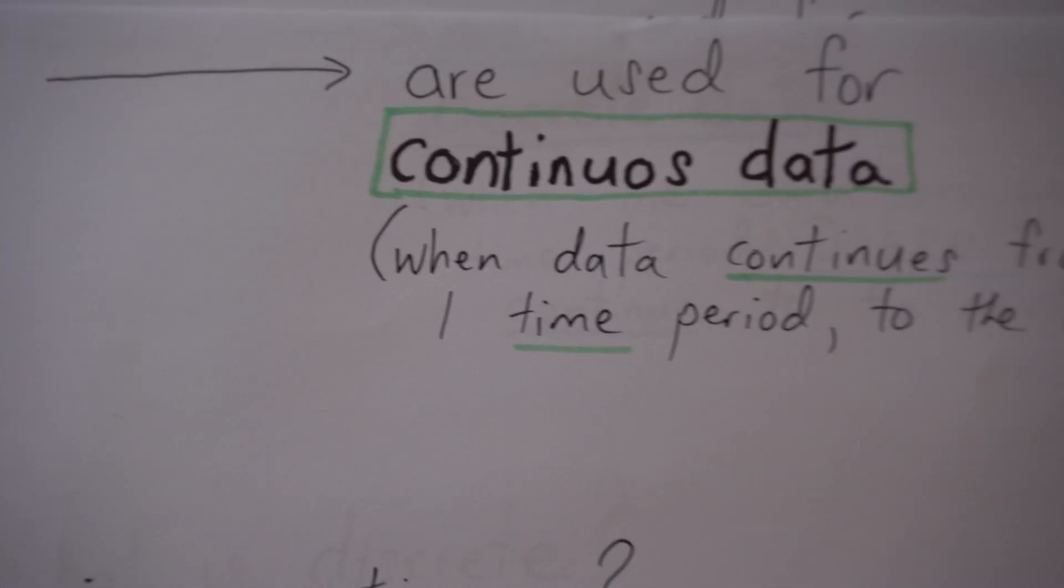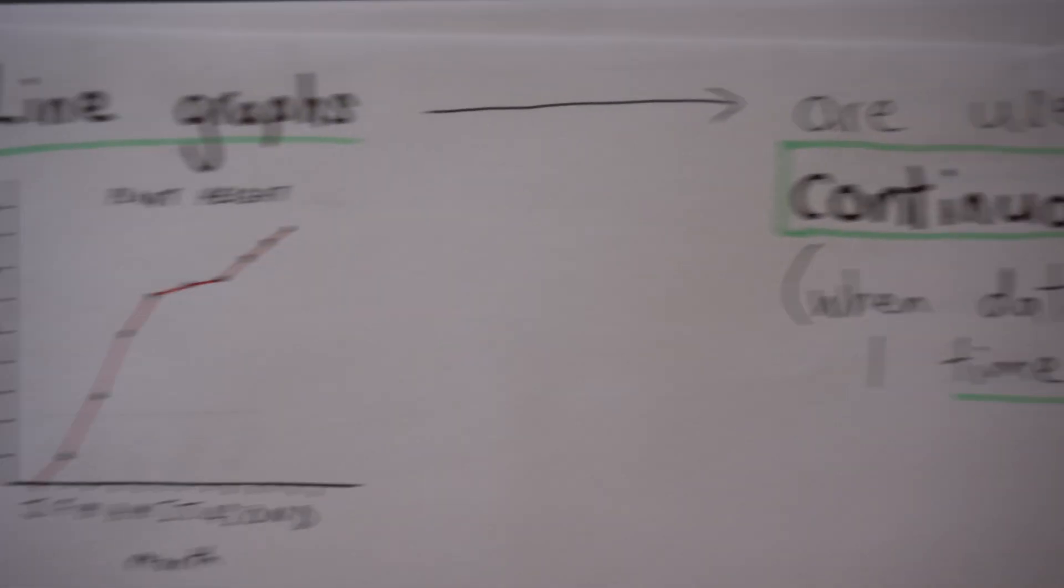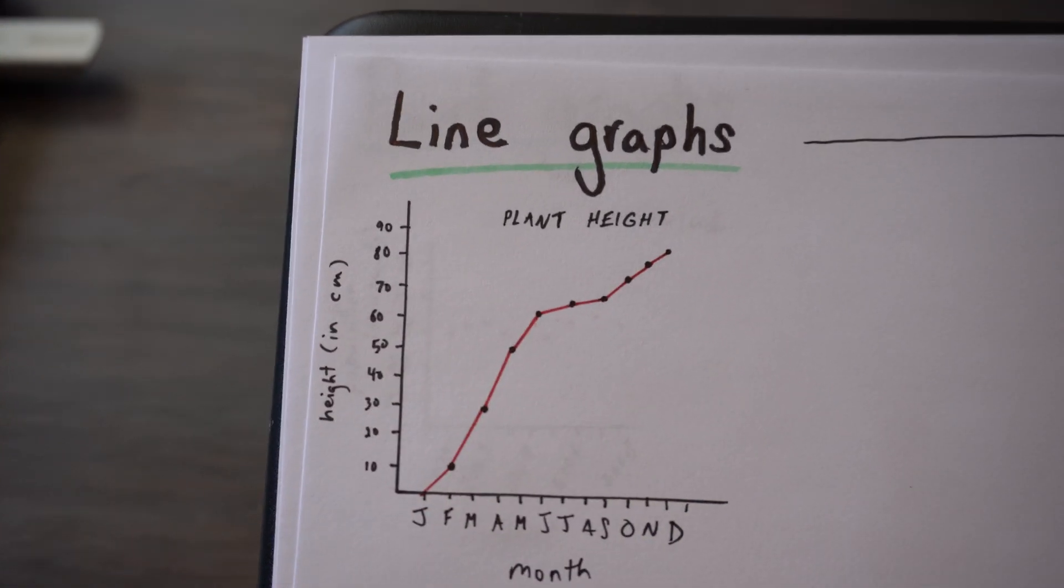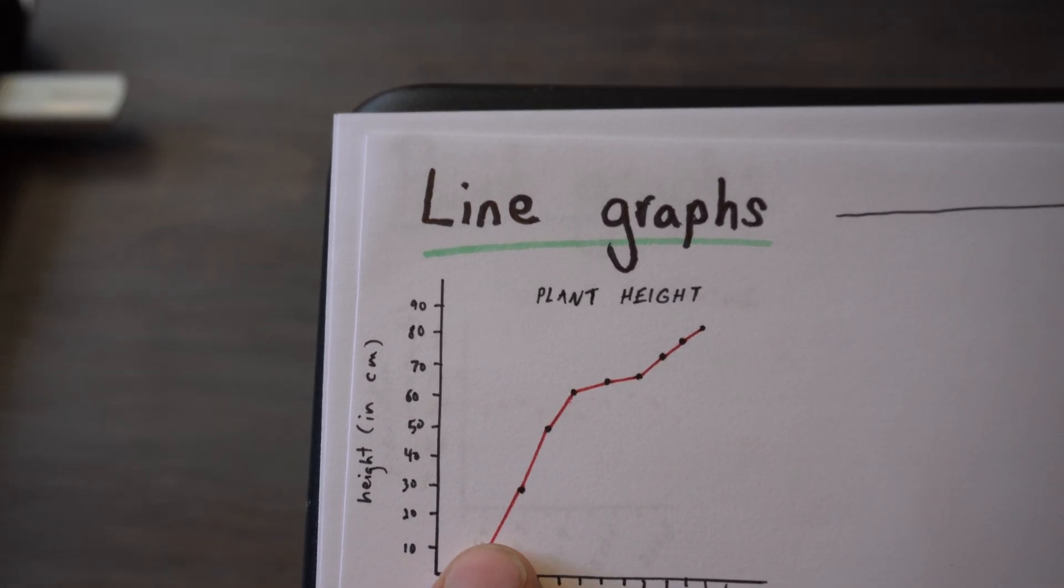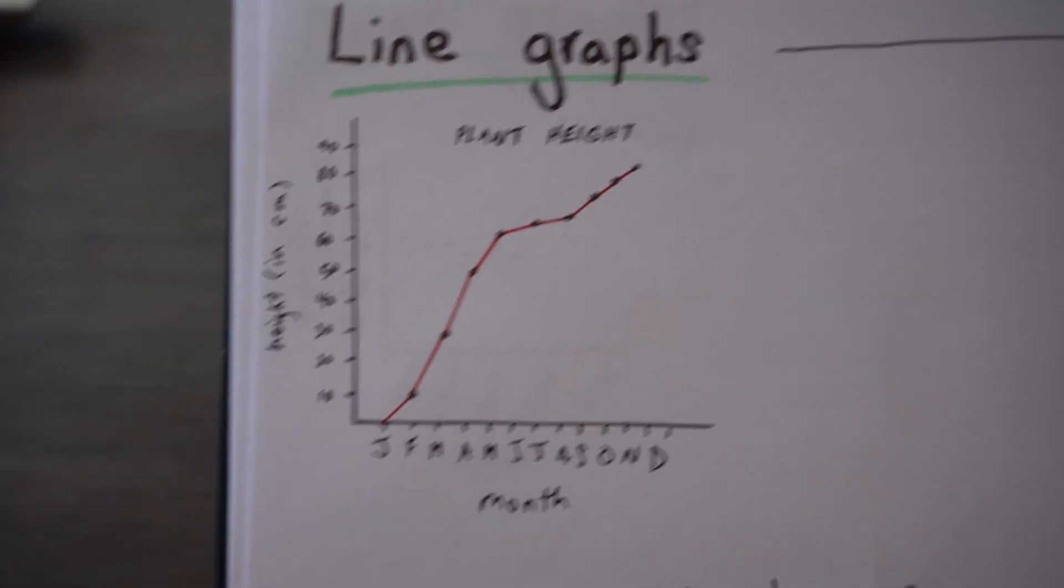We can do this because that data is called continuous data. What that means is one point will affect the next point. So if your plant's growing in one month, then the next month it will continue on growing. It doesn't start from zero again.